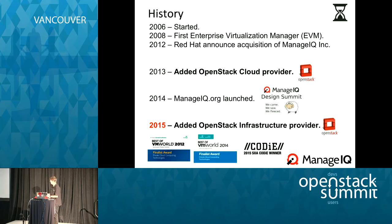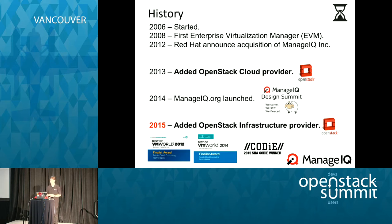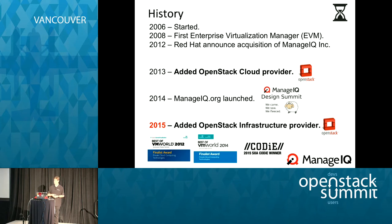Let's go through the history. We started in 2006 — like most things, we started proprietary, closed source. ManageIQ Inc was formed, and 2008 was the first product release, called Enterprise Virtualization Manager. It was going after the big virtualization vendor out there. Some of the biggest vSphere environments in the world are actually managed using the downstream product, better than that vendor can themselves.